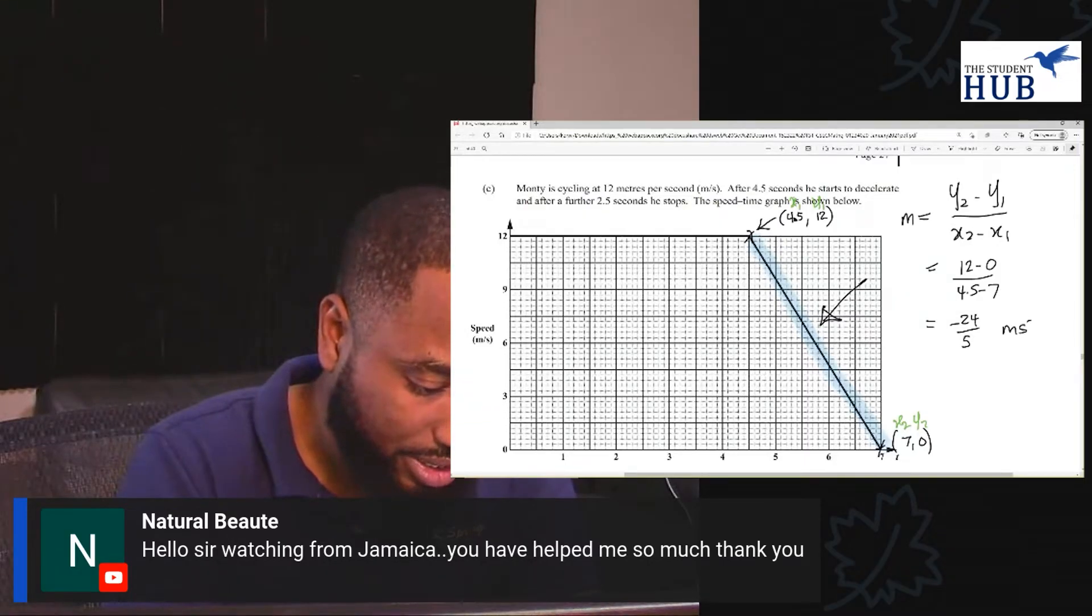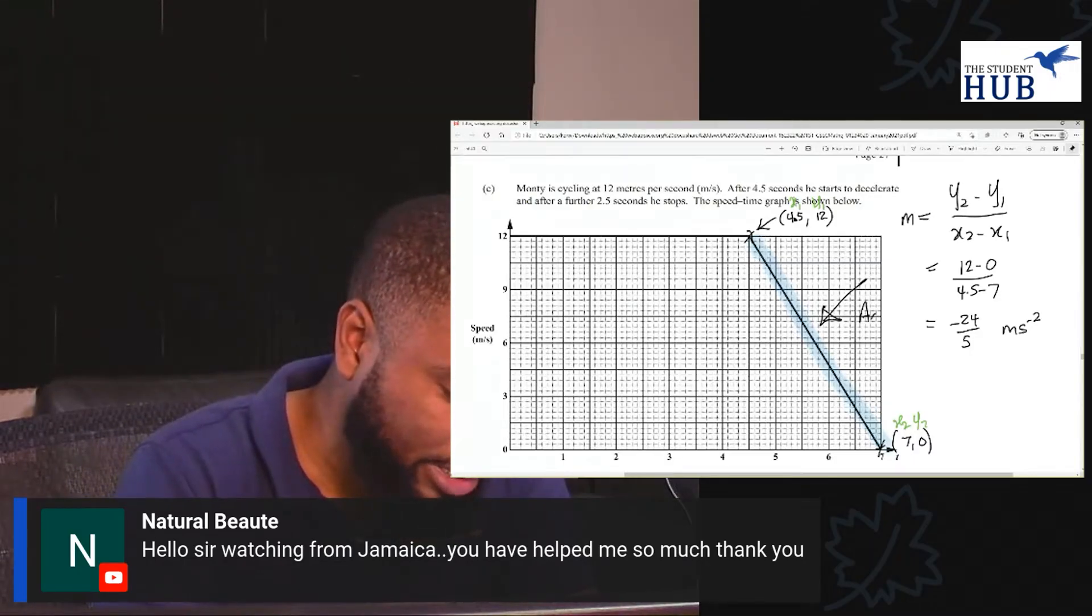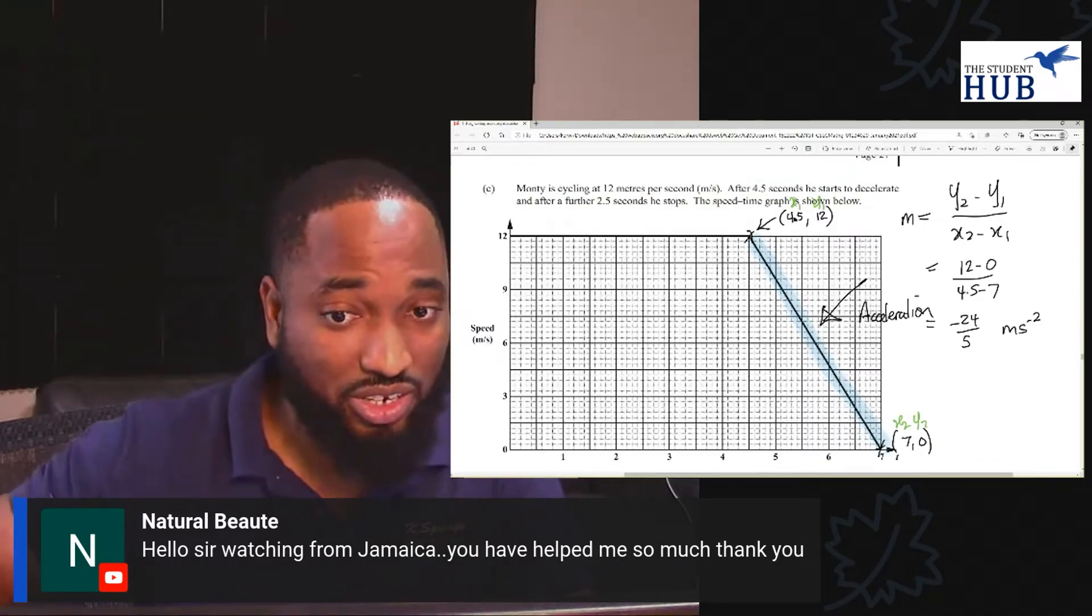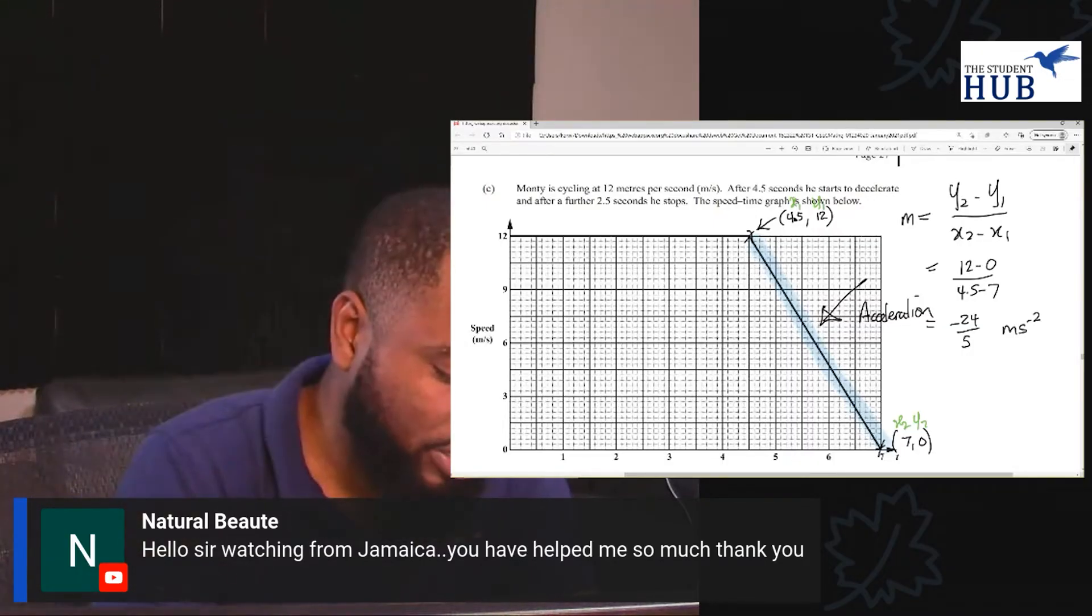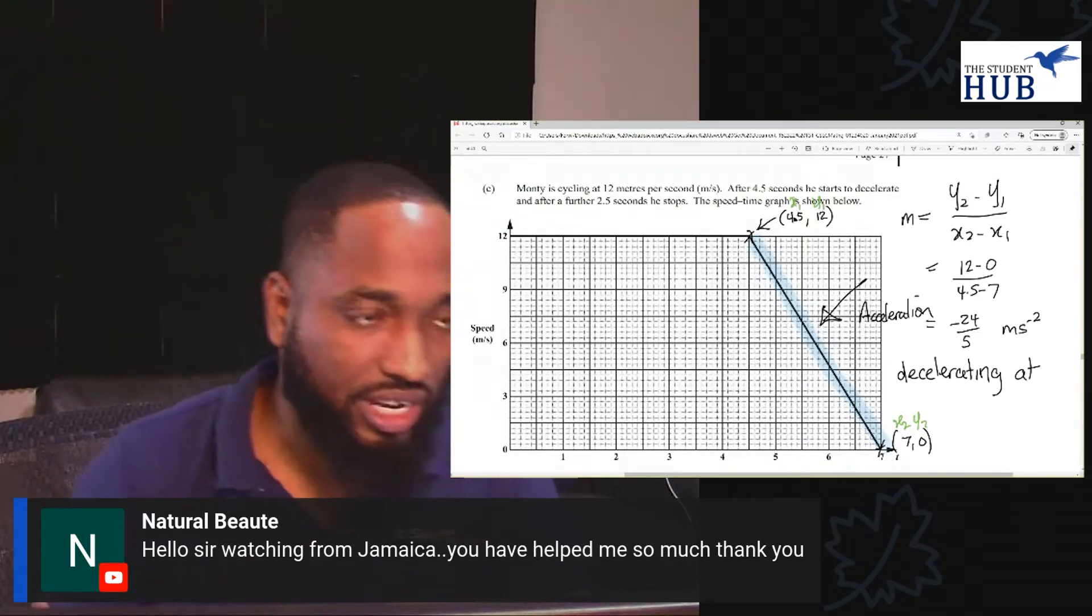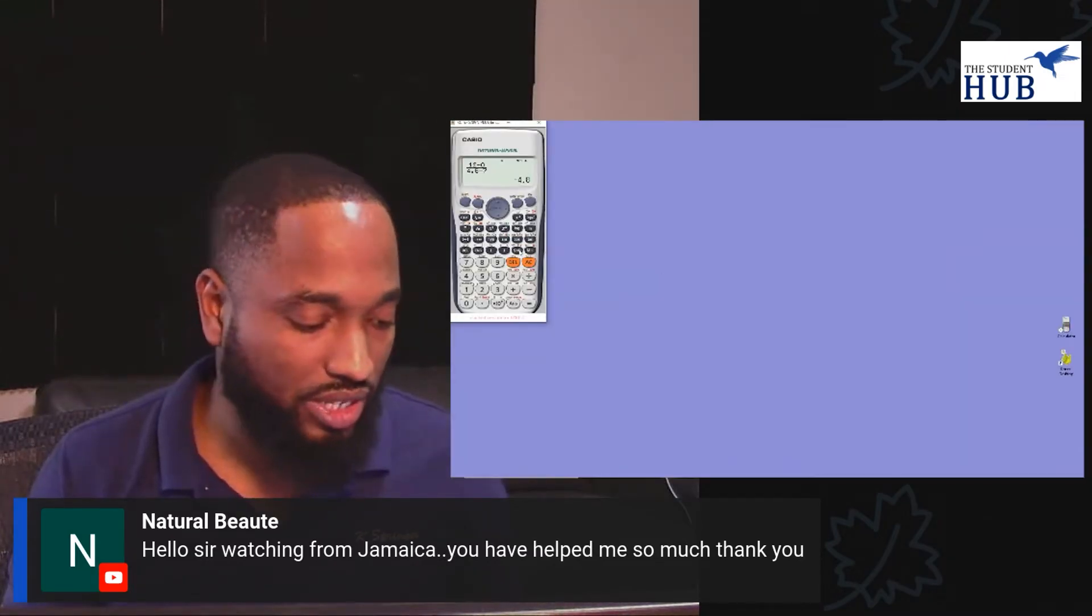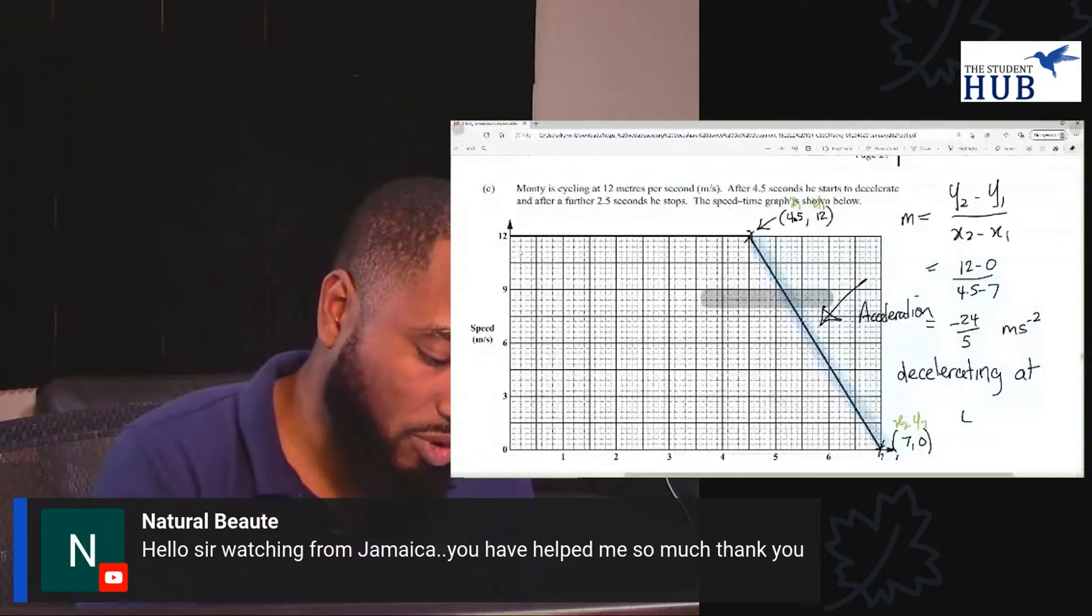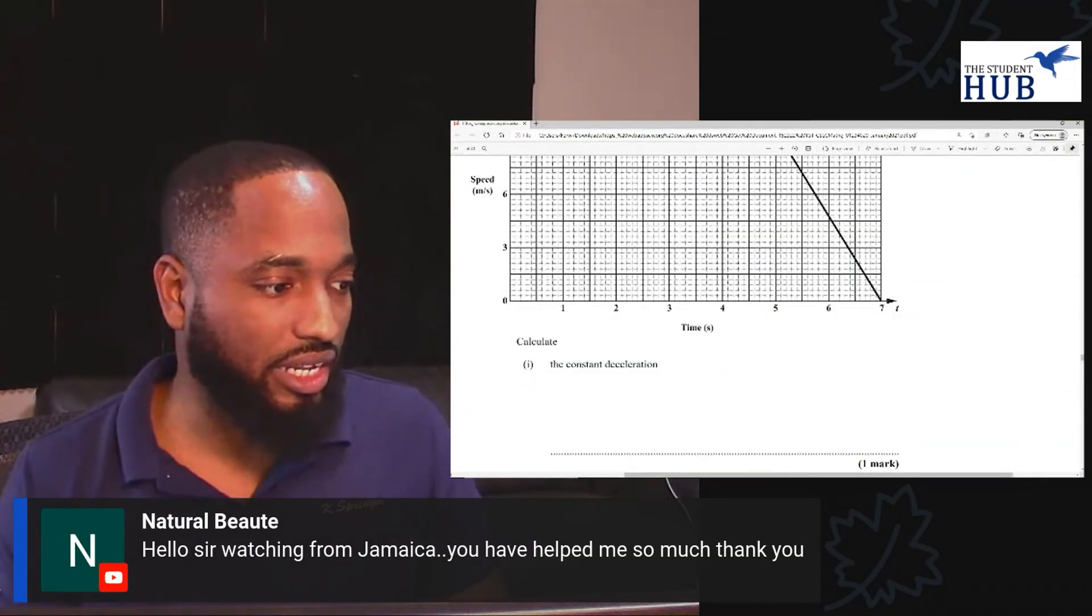And we are working out 12 minus 0 over 4.5 minus 7. So we get this value. I'm writing it back. Negative 24 over 5. This is in meters per second squared. So that's the unit that we're using. This is if you're dealing with acceleration. But if you're talking deceleration, you just use the positive value because it will be redundant to say deceleration and give the negative value. Therefore, the deceleration is 4.8 meters per second squared.